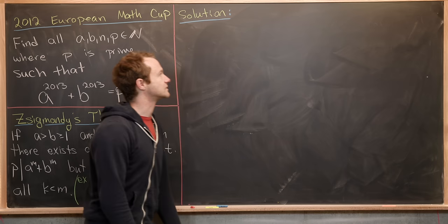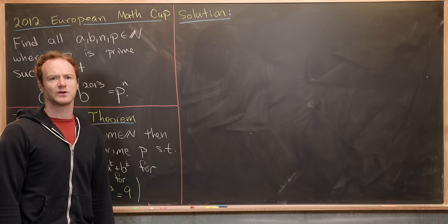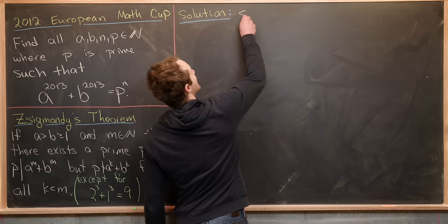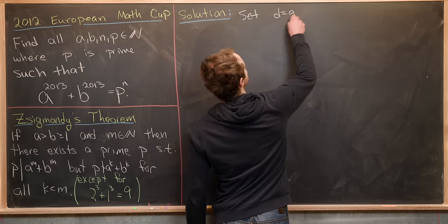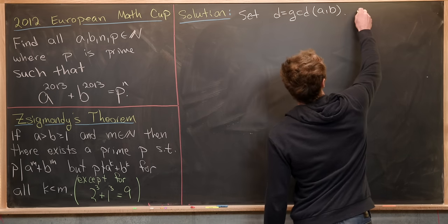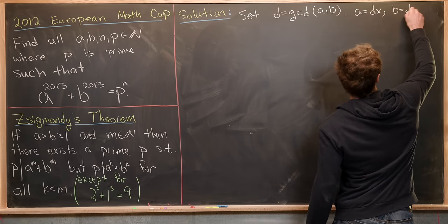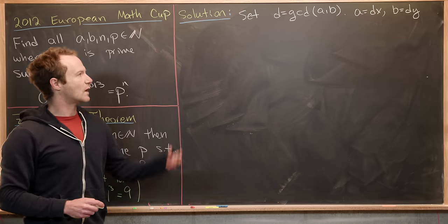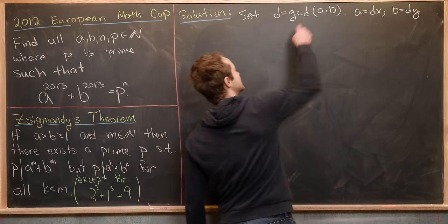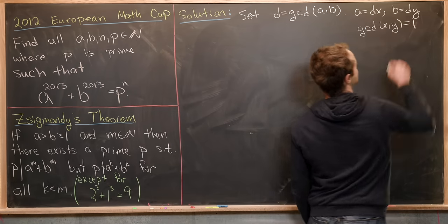Okay, so now let's jump into the solution. So we're going to start off by simplifying our setup so that we're dealing with relatively prime numbers. And we're going to do that by setting D equal to the GCD of A and B. That means we can write A as D times X and we can write B as D times Y, where X and Y are some natural numbers. Furthermore, because D is the GCD of these two, we know that the GCD of X and Y is 1.